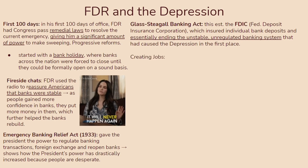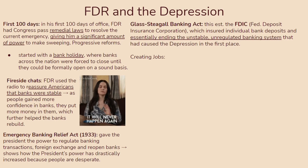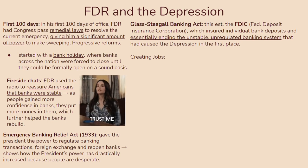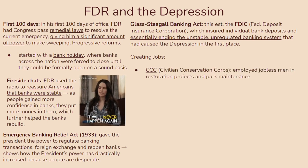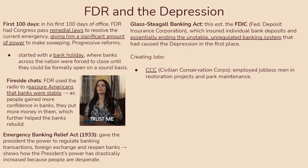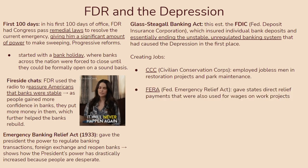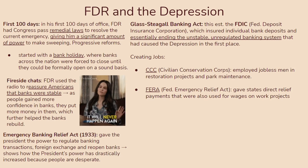Another priority high on FDR's list is creating jobs. A lot of people were unemployed, so it naturally makes sense to focus on getting people jobs. There are a bunch of organizations he's going to create. First, the CCC — the Civilian Conservation Corps — which employed jobless men in restoration projects and park maintenance. You also have the FERA — the Federal Emergency Relief Act — which gave states direct relief payments that were also used for wages on various work projects commissioned by the states.